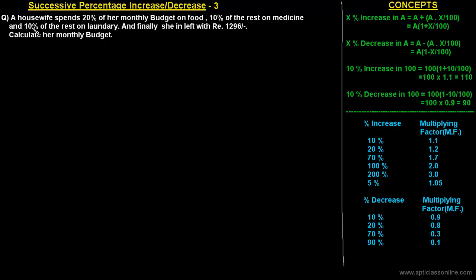So first, read this question: A housewife spends 20% of her monthly budget on food, 10% of the rest on medicine, and 10% of the rest on laundry, and finally she is left with rupee 1296. Calculate her monthly budget.